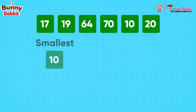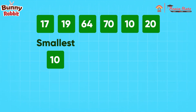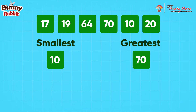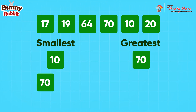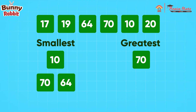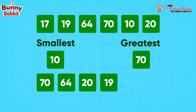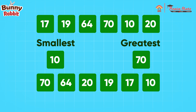Smallest number is 10, greatest number is 70. Descending order is 70, 64, 20, 19, 17, 10.